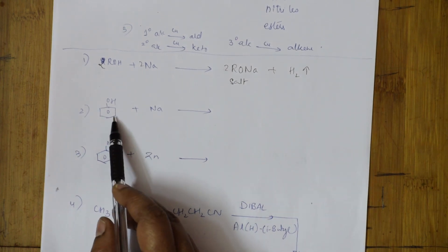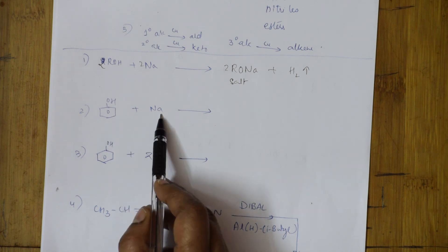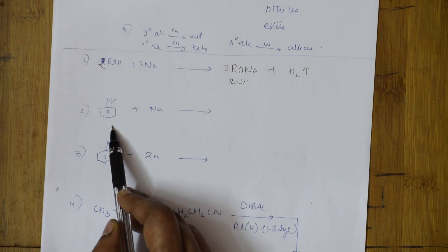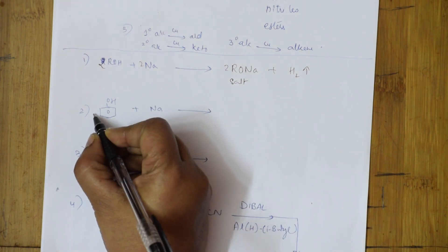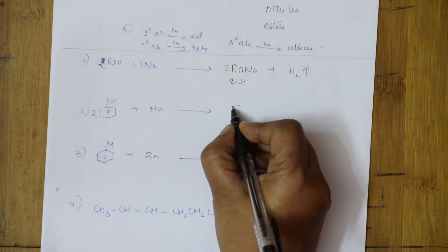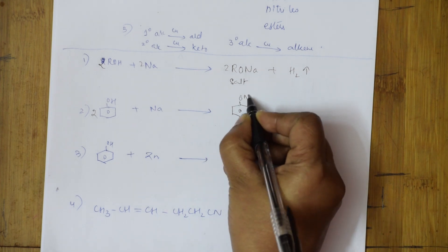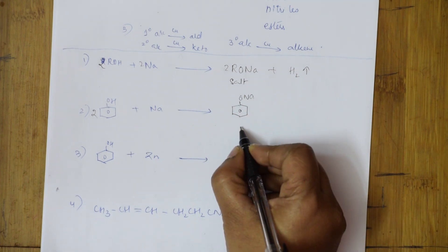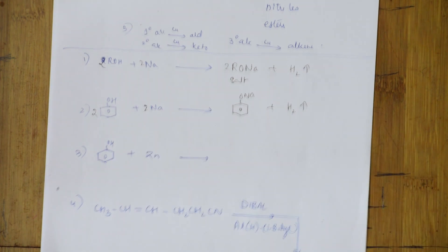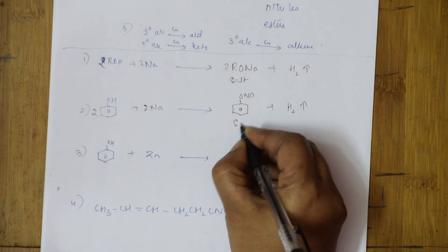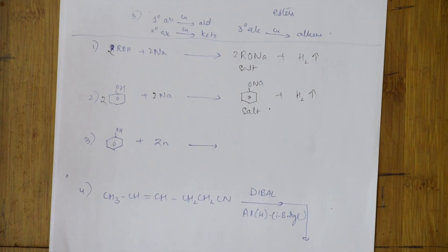Here I have phenol plus sodium — again metal plus alcohol. I get salt plus hydrogen gas. Two moles of phenol gives sodium phenoxide (ONa) plus H₂ gas. This is again: salt plus hydrogen gas.